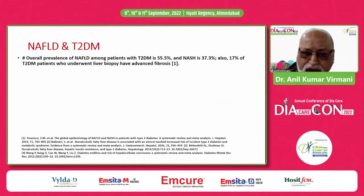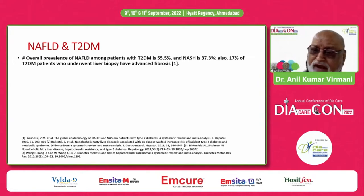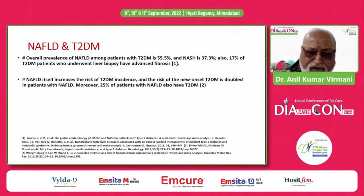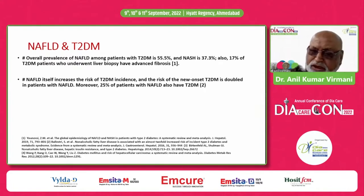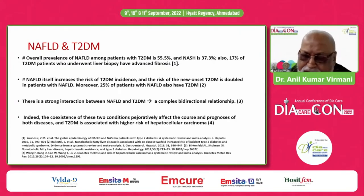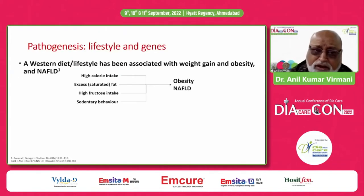The overall prevalence of NAFLD among patients with type 2 diabetes is almost 55.5%, and NASH is almost 38%. And 17% of type 2 diabetes patients who underwent liver biopsy had advanced fibrosis. NAFLD itself increases the risk of type 2 diabetes incidence, and the risk of new-onset type 2 diabetes is doubled in patients with NAFLD. Moreover, 25% of patients with fatty liver also have type 2 diabetes. There is a very strong, complex bidirectional relationship between fatty liver and type 2 diabetes.